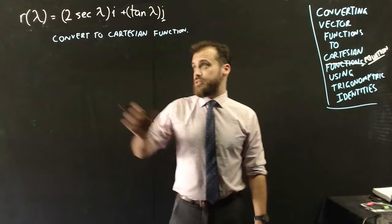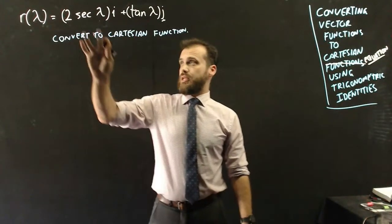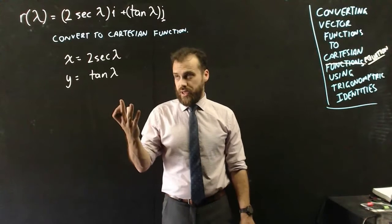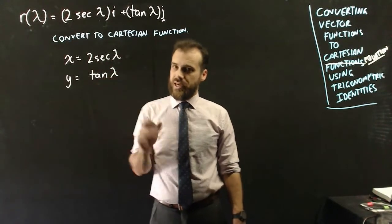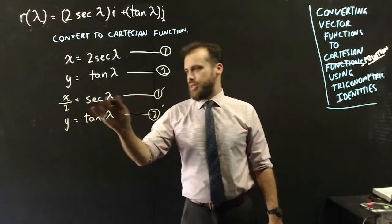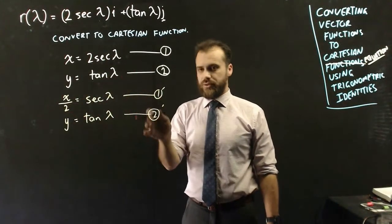So one more really fast. We've got this one, we need to let that equal x and that equal y. Now we can't find lambda by itself, but we can find sec lambda and tan lambda by themselves. So this was easy, just divide by 2, and 2 didn't change at all.